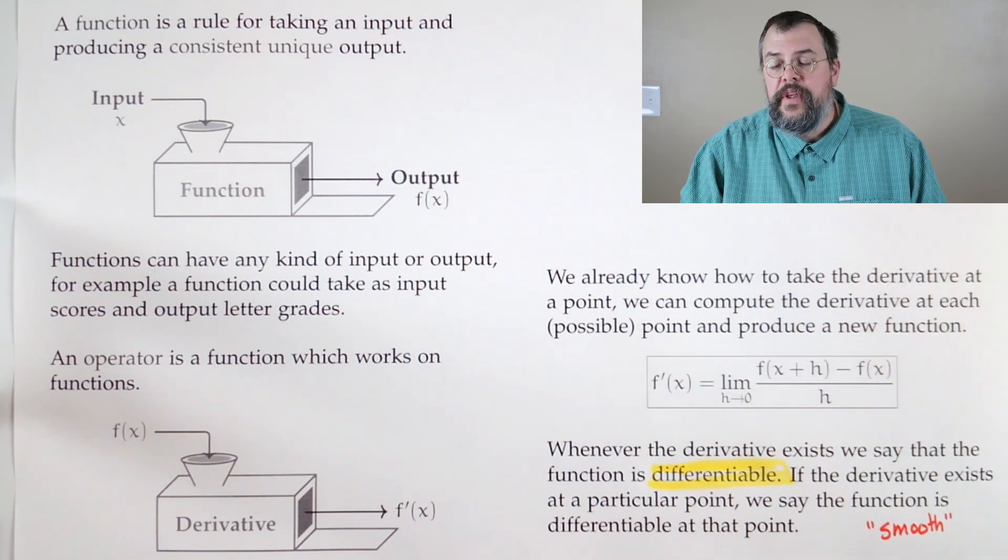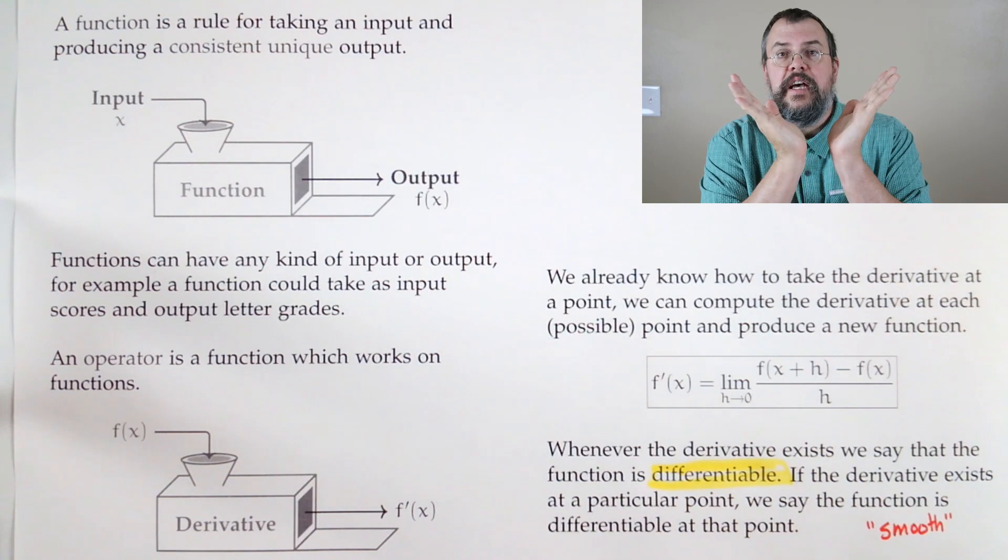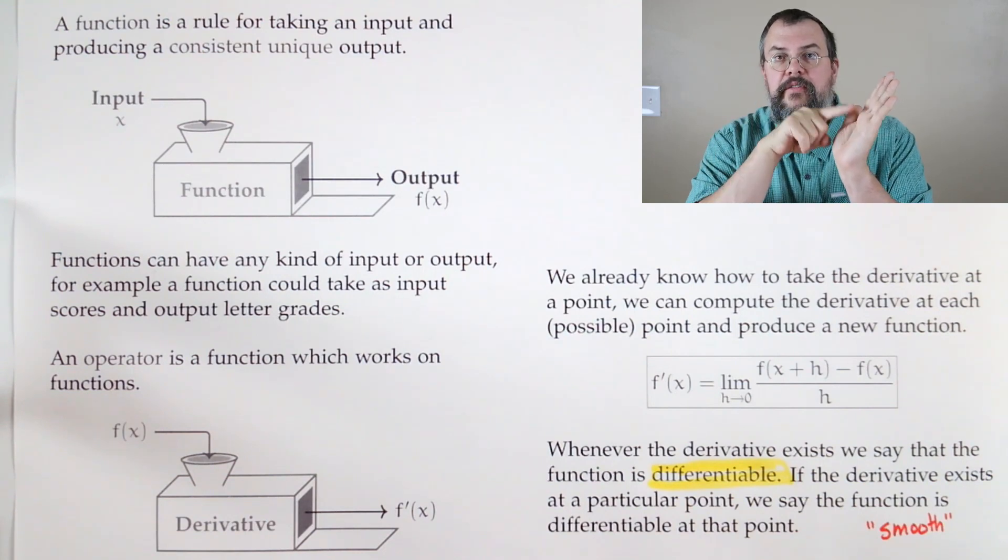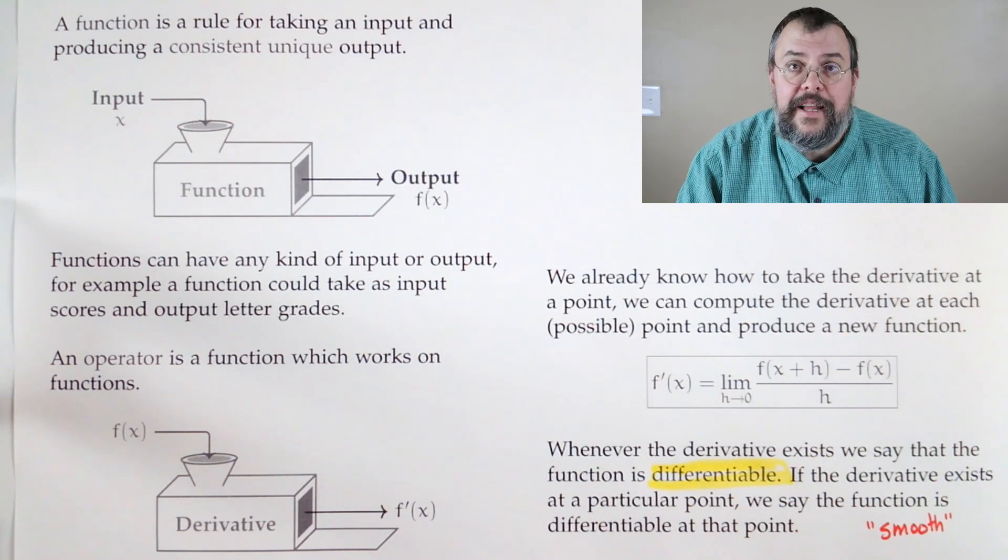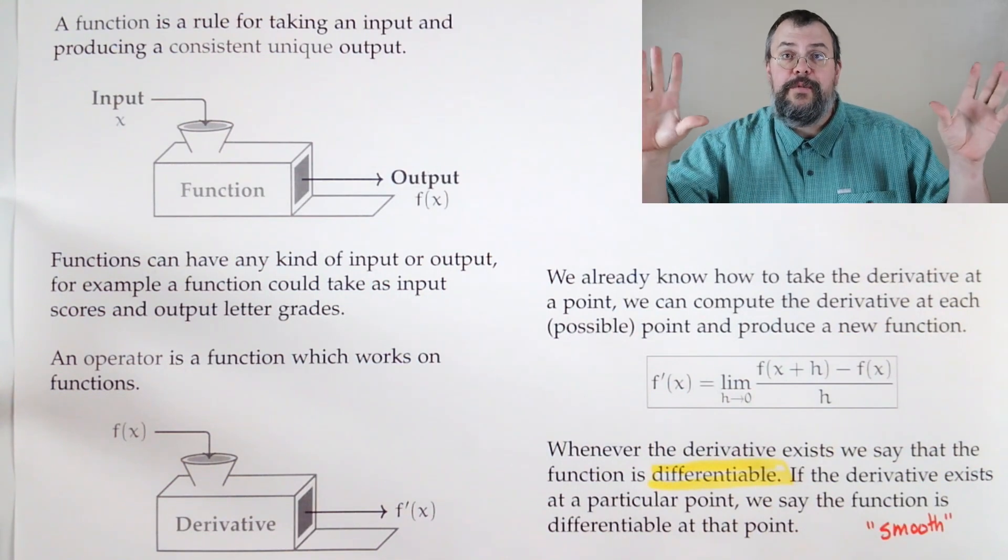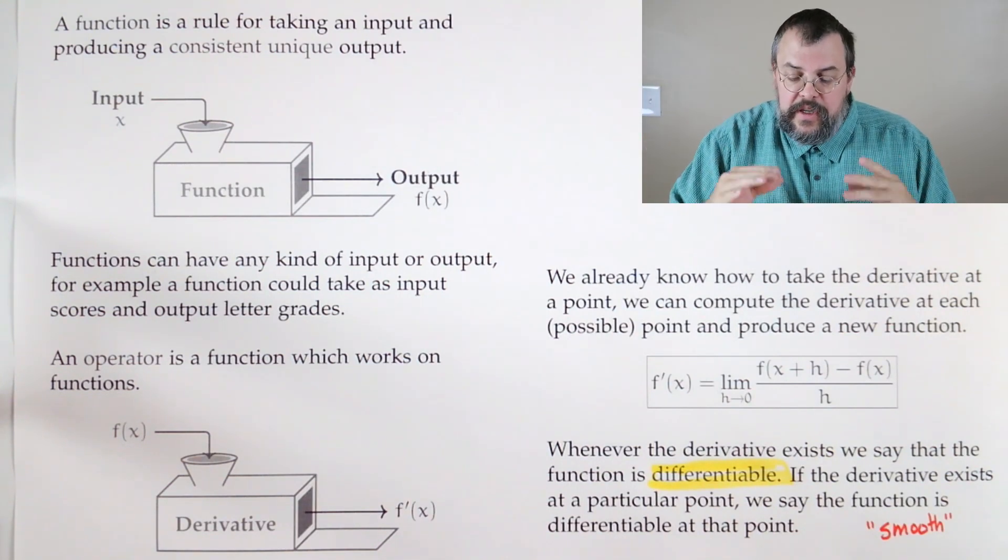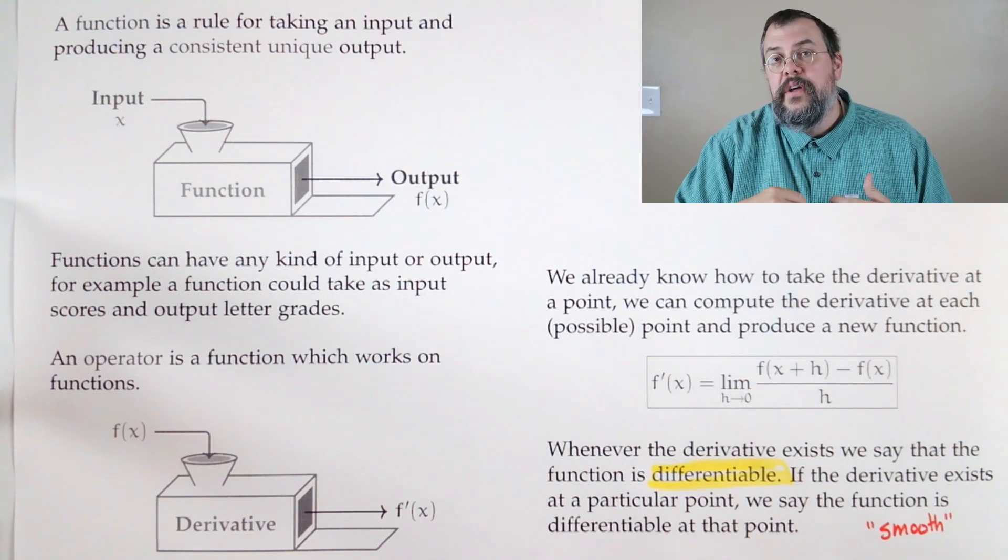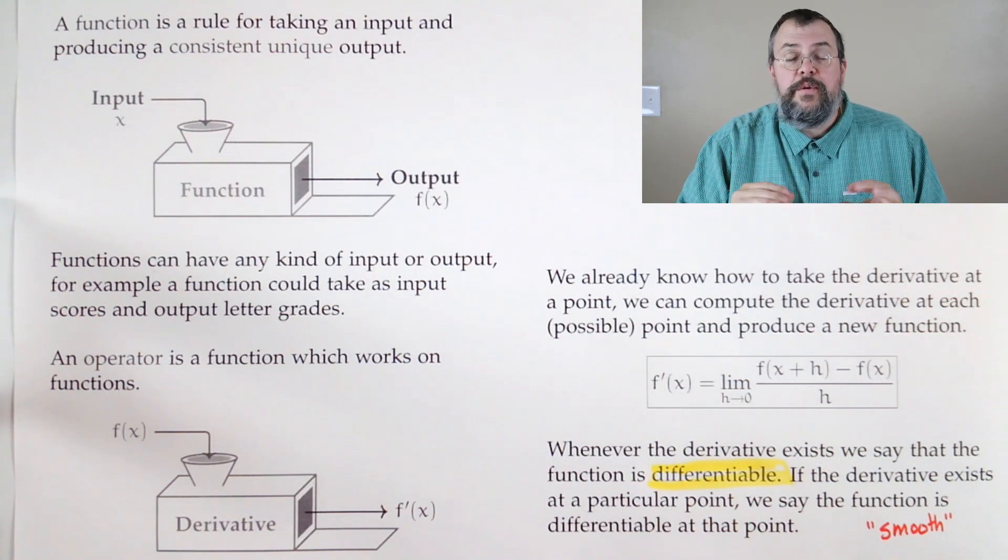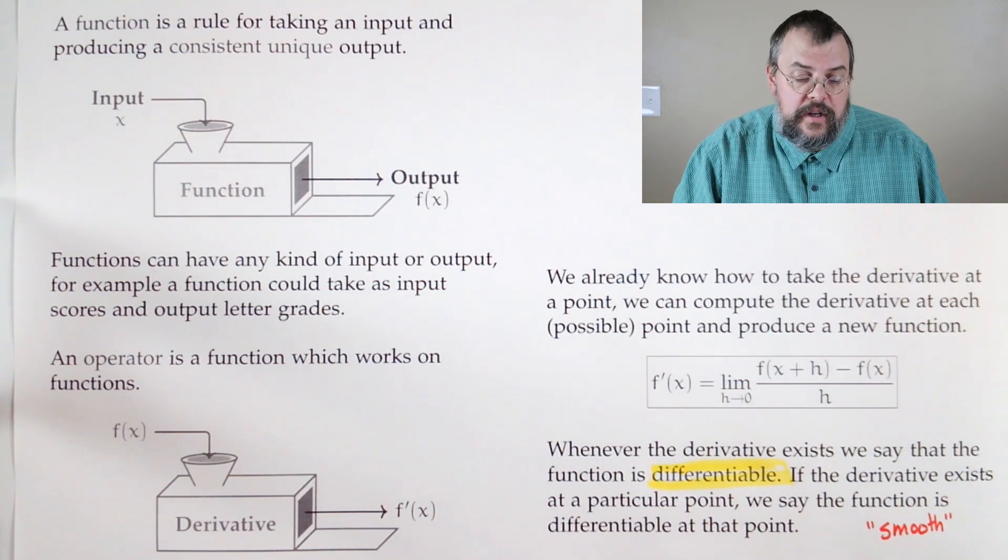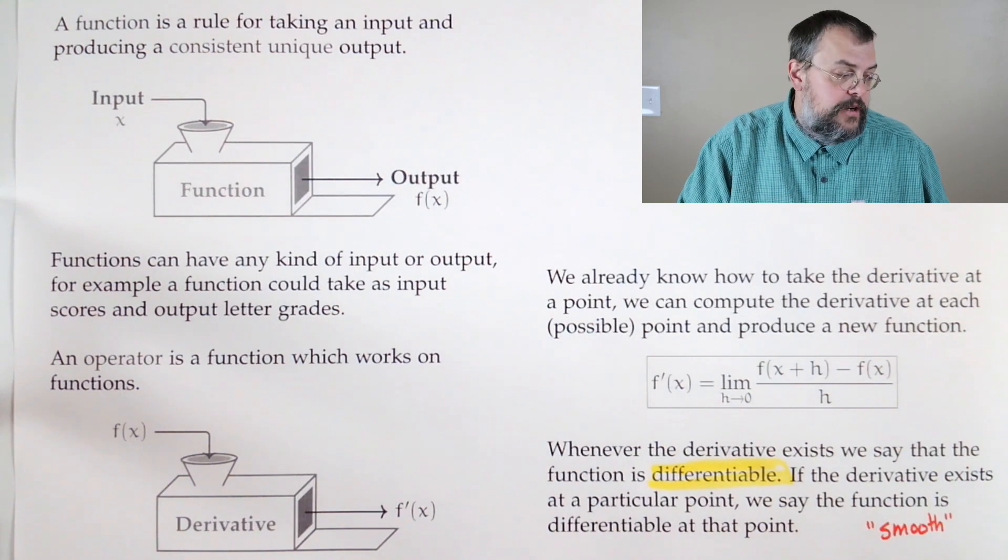And so we do know examples of things which are not differentiable at certain points. As an example, if you recall the absolute value function, there's that little kink right there, right? It's not differentiable at that point. Now it is differentiable at other places. So you have to be careful. Oftentimes people talk about it's not differentiable here. There are functions which are not differentiable anywhere. And so you have to keep that in mind.